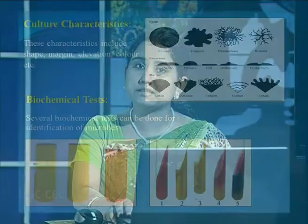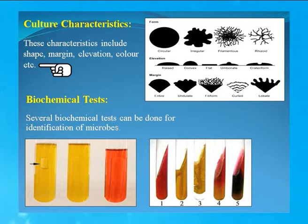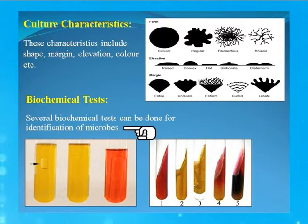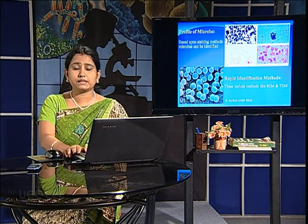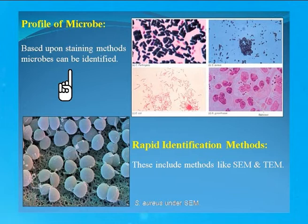One can also identify a microbe by observing its culture characteristics — that is, the shape, margin, elevation, colour, etc. of the colony formed by the microbe on a medium. There are certain biochemical tests present for identification purposes, for example the carbohydrate fermentation test or IMViC test, which are extensively used for the identification of microbes. One can also identify a microbe by observing its profile, which can be done by various methods, and staining is one of them.